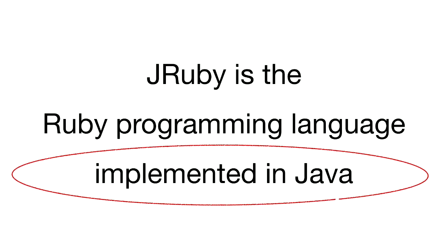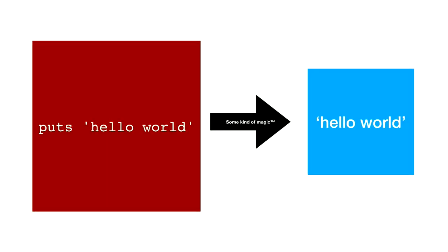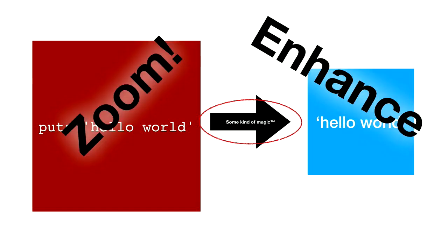So now we're on to the next bit. What does it mean for the Ruby programming language — the language defined by the Ruby specs — to be implemented in Java? So this is my basic understanding of how Ruby works. You run your Ruby script, some kind of magic happens, and then you get some output — in this case, hello world. And to understand what it means for Ruby to be implemented in Java, we need to have a look at that step in a bit more detail.